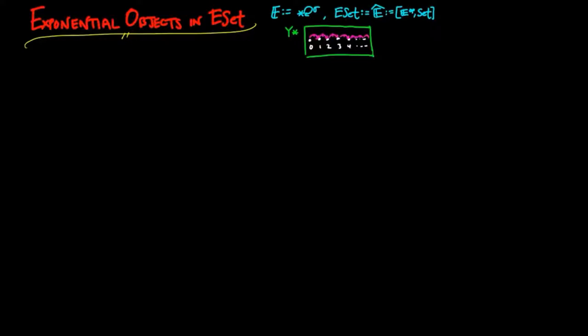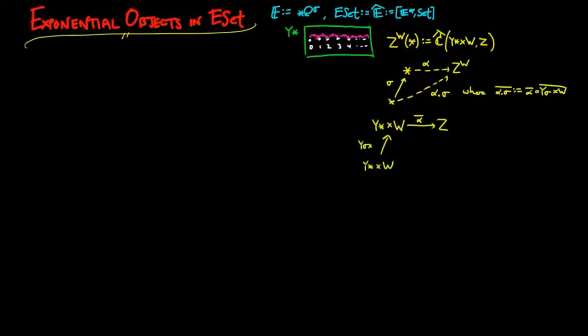We will use the adjunction of products and exponentials as well as the Yoneda lemma to define the exponential Z to the W. In other words, we set the figures of Z to the W as a set of morphisms from the product of the representable in W to Z. We have alpha as a figure in Z to the W if and only if the exponential adjunction of alpha, which we denote by alpha bar, is a morphism of containers from the product of the representable in W to Z.